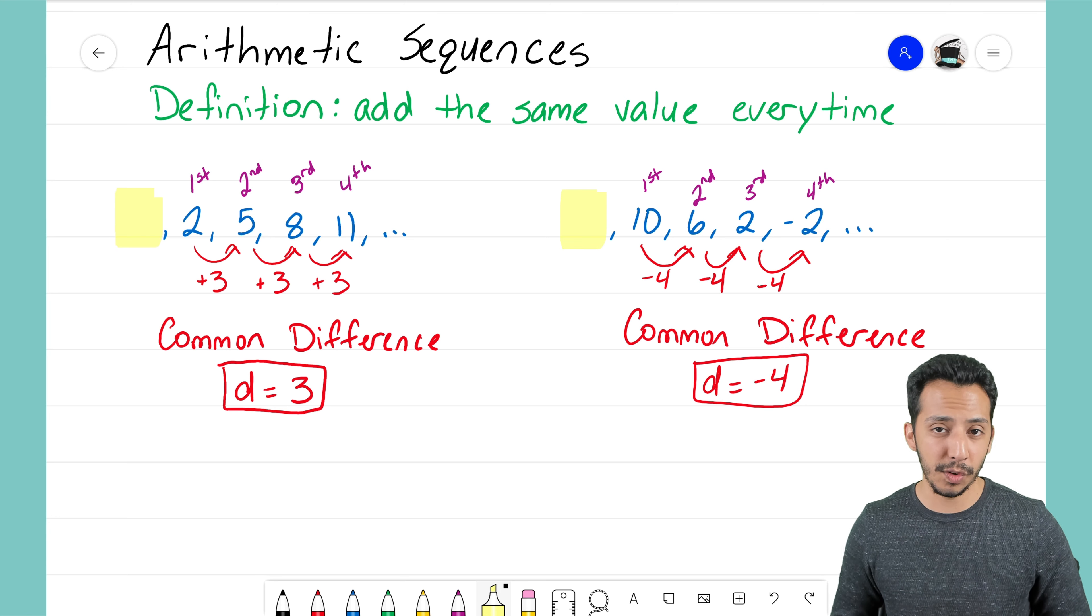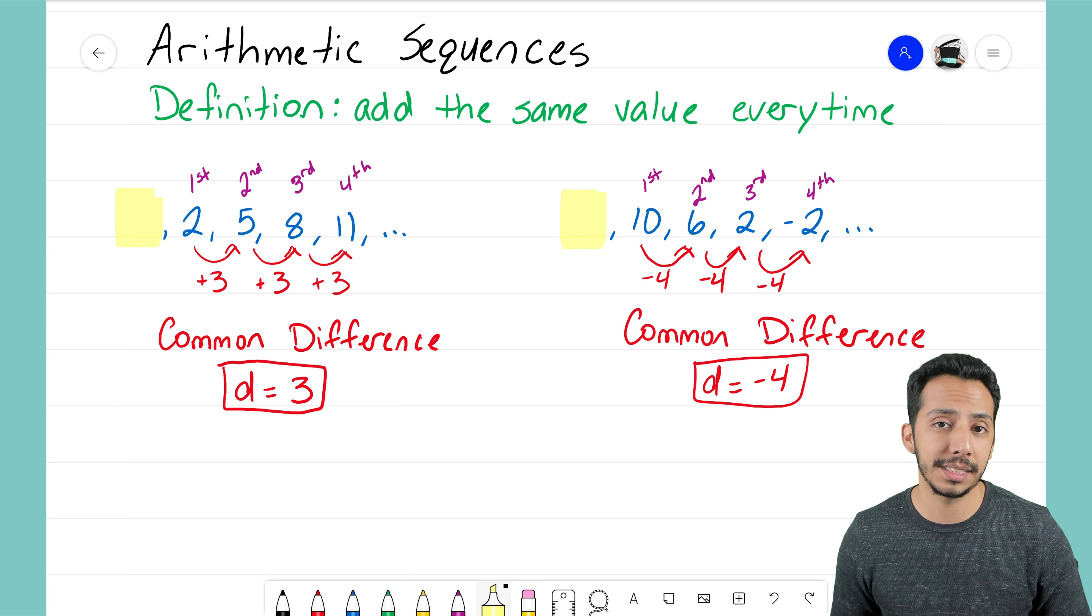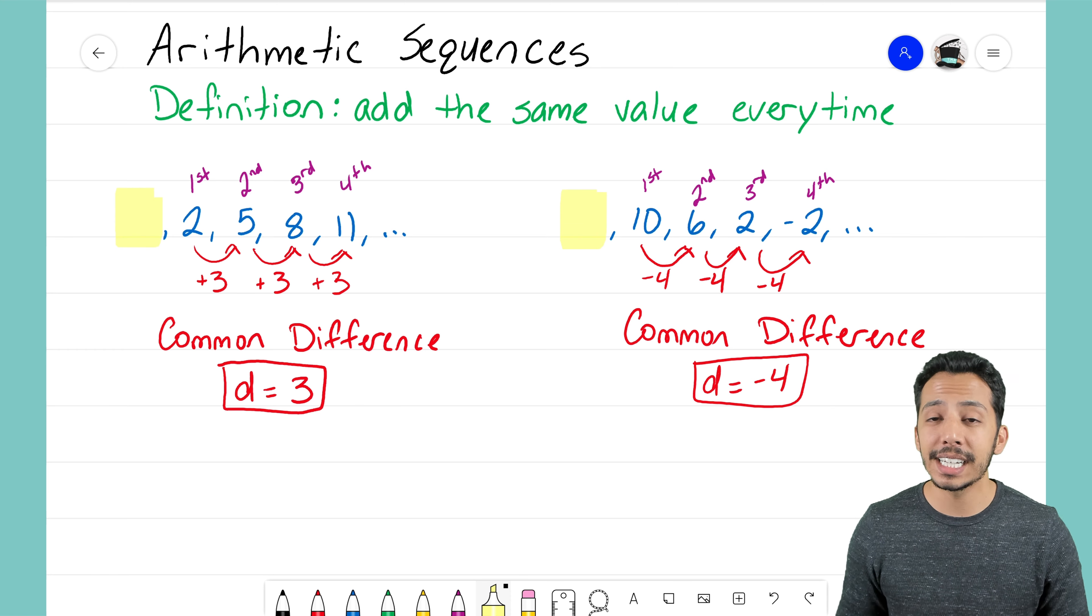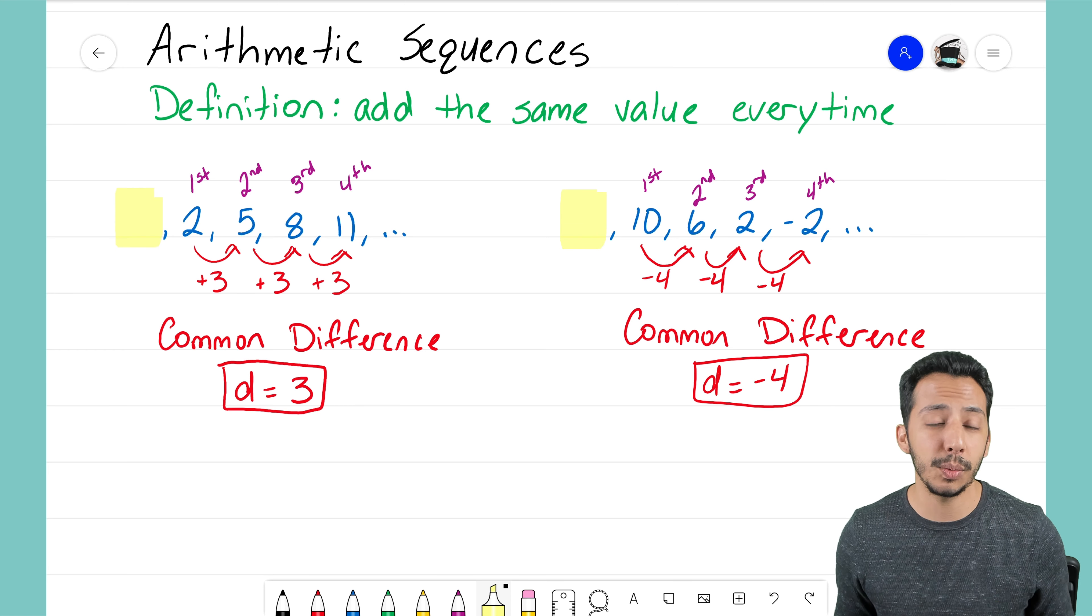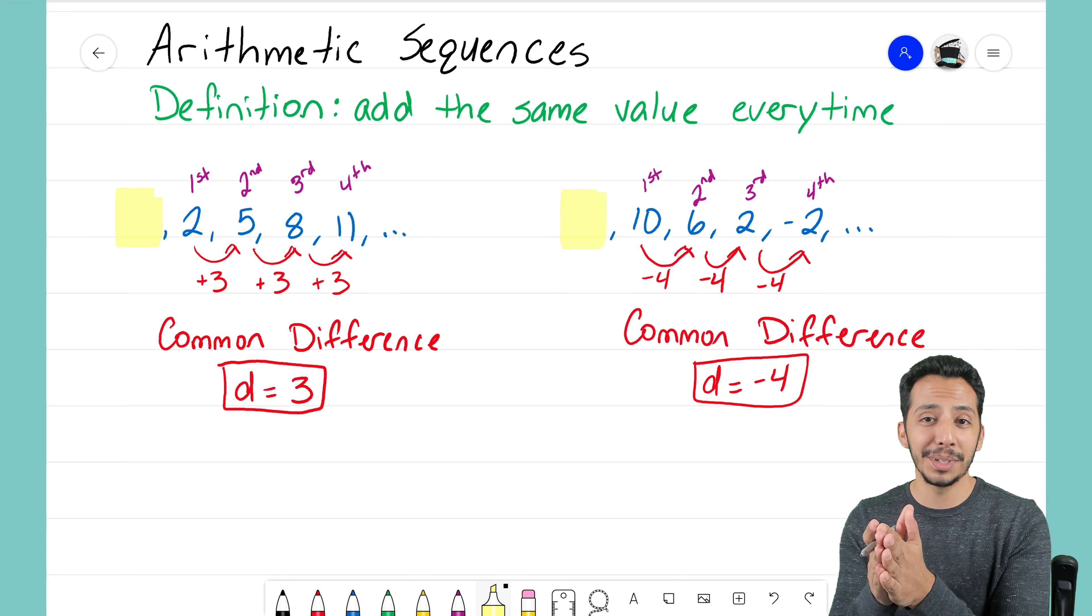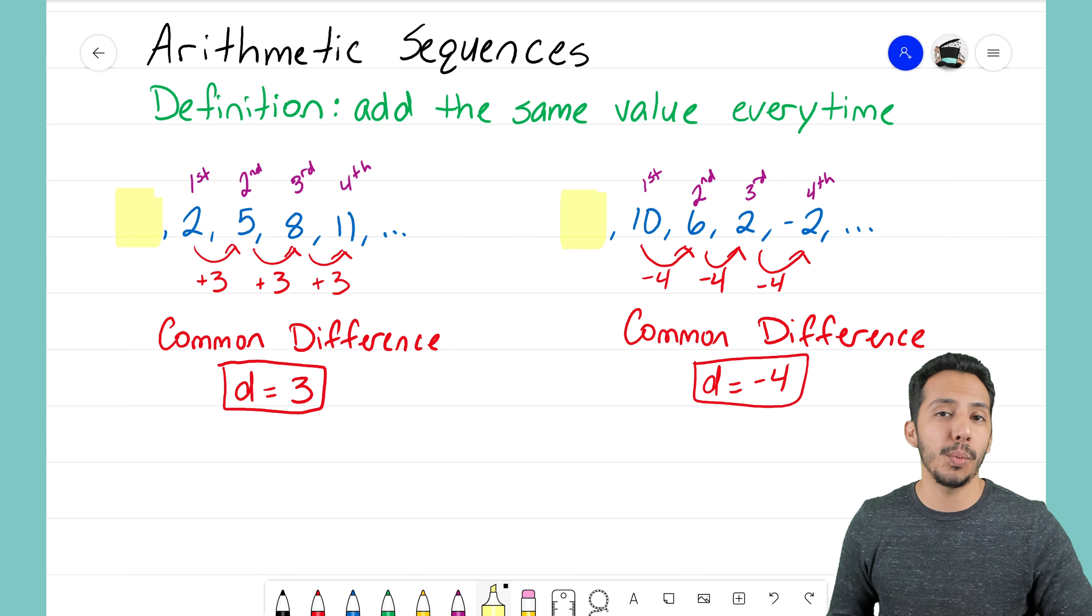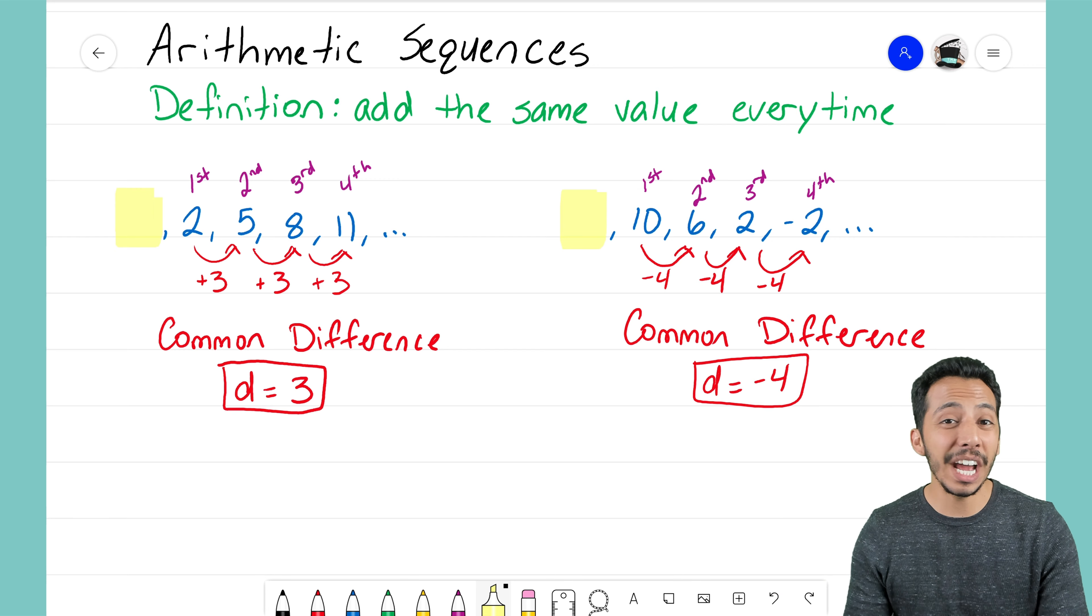It's sort of our starting place for our sequence, but it's kind of an invisible starting place, right, because we're not seeing it clearly when we write out the sequence to begin with, because we always show our first term. But sometimes we have to figure out that zero term, that term right before the one we're starting with.